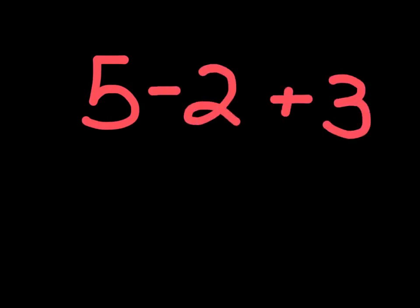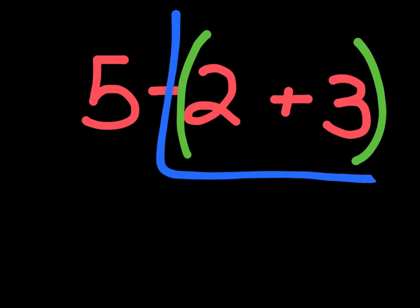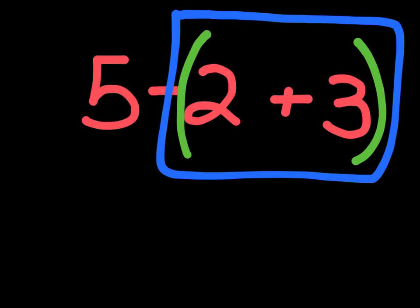5 minus 2 plus 3. Well, you want the person doing your question to do, let's say you want the person doing your problem to do 2 plus 3 first, and then the 5 minus part. You would put parentheses around the 2 plus 3. And what the parentheses does is that you have to do whatever is inside of these first, and then you do the rest of the equation.